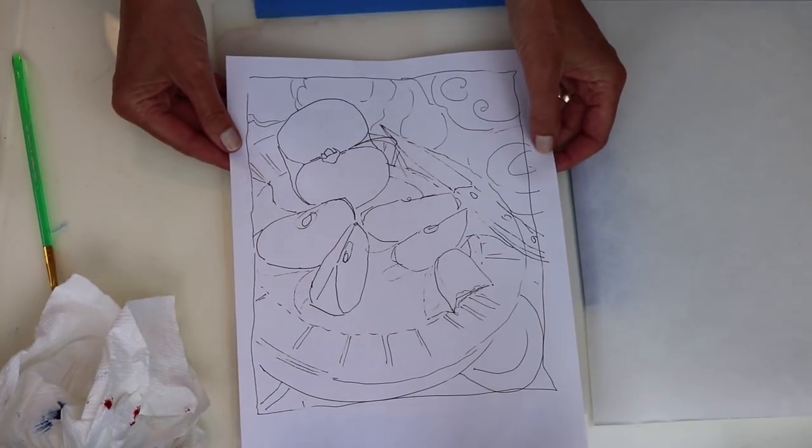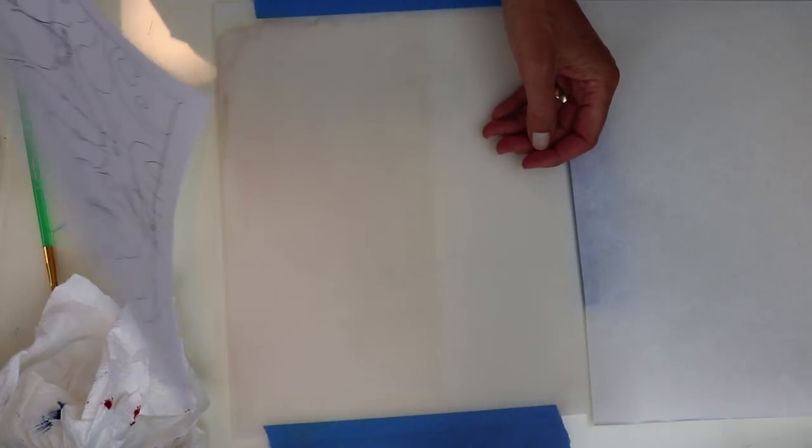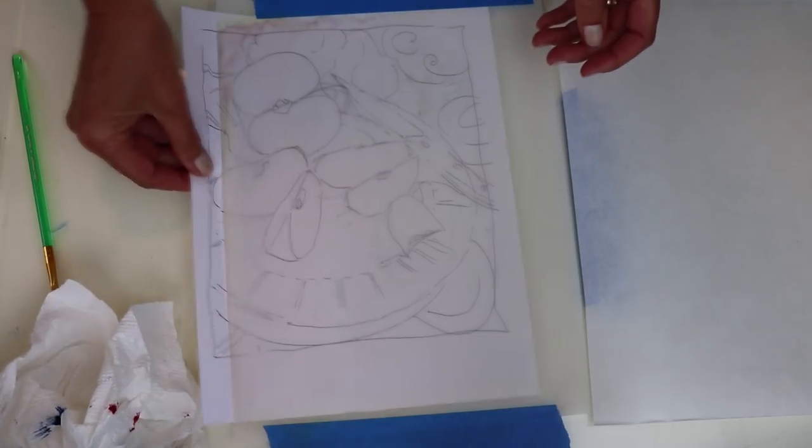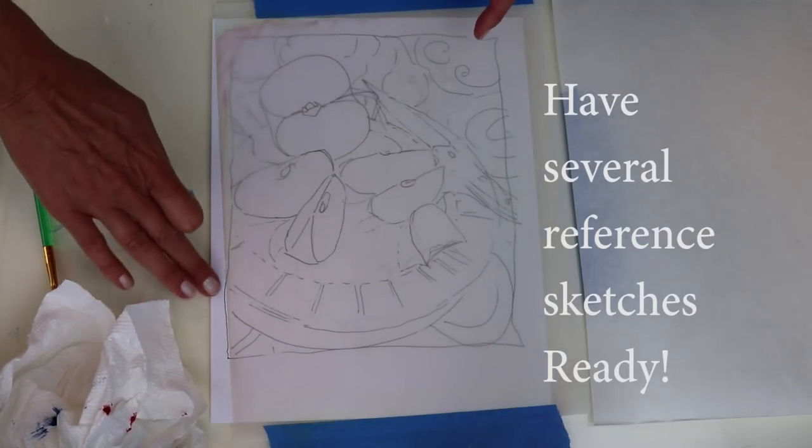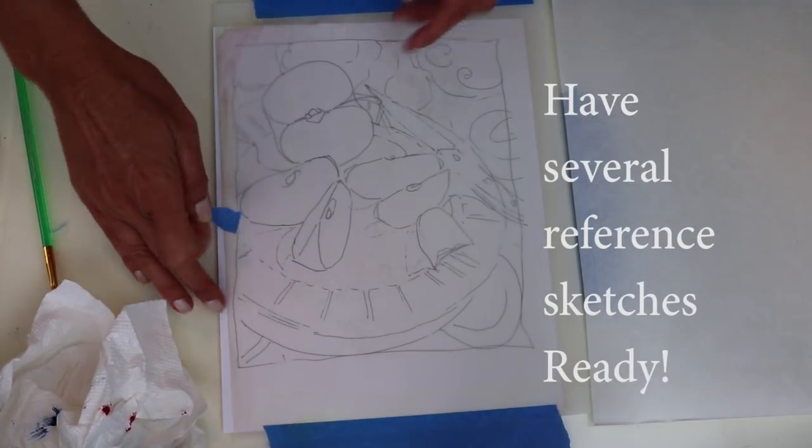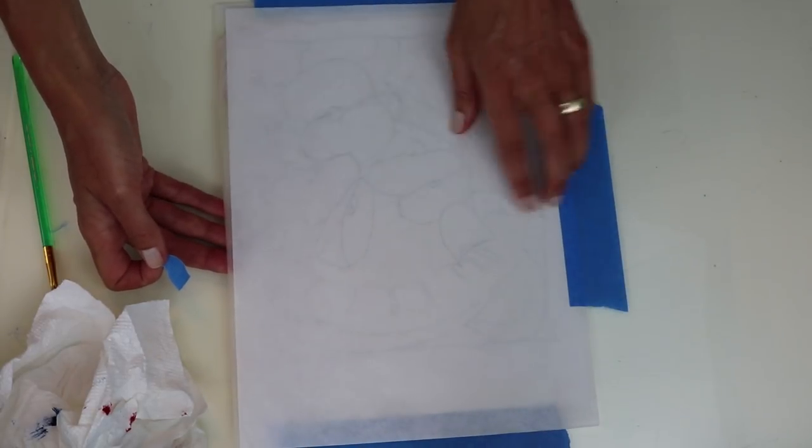Your reference material will be slid underneath the translucent duralar. You can use everything from rough sketches to a photograph and you'll want to secure them to the table so that they don't wiggle around underneath the duralar.